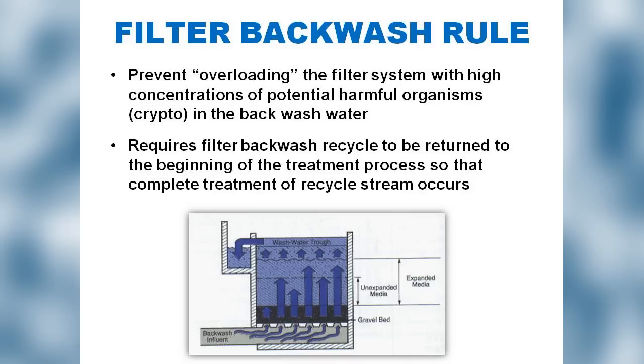The Filter Backwash Recycling Rule addressed the concern that if we use a filter to remove crypto and then backwash that filter, recycling backwash water back into the plant without adequate treatment could create a slug of crypto on the filtration system. The rule says: if you're recycling your backwash water, recycle it back to the head of the plant where that water will receive full chemical treatment — coagulation, flocculation, sedimentation — to optimize crypto removal before it hits the filter. Surface water treatment facilities that recycle their backwash water basically have to document that they're doing this properly.